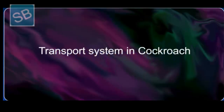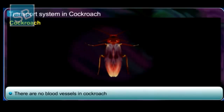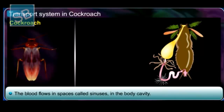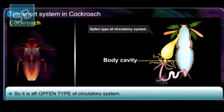We will study about the transport system in cockroach. There are no specialized blood vessels; however, the blood flows into the spaces called sinuses present in the body cavity. Therefore, such a circulatory system is known as open type.